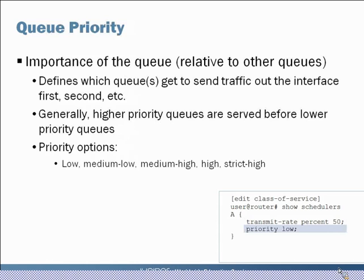The next parameter is queue priority — the relative importance of one queue to another. This defines when packets in a given queue will get sent out on the interface. A high priority queue's traffic will get sent out before a low priority queue. You can see the priority options from low up through strict high; a higher priority queue will get better treatment in that when a packet arrives, it gets sent out first.